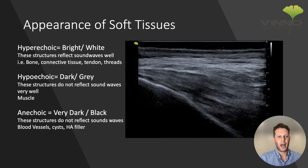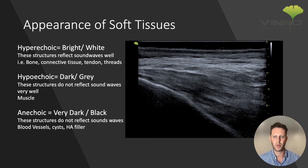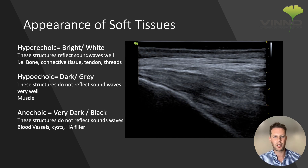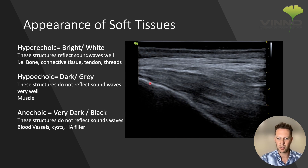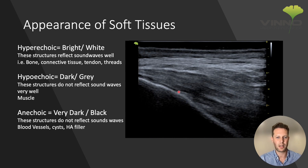Let's talk a little bit about how different soft tissues appear on ultrasound. Any structures that are highly reflective of sound waves are going to appear brighter on ultrasound, while structures that let the sound waves pass through them appear darker. In ultrasound terminology we refer to this as echogenicity. In this image of the temple region, at the bottom we have this really bright white line — this is the temporal bone. Hyperechoic structures such as bone and connective tissue are good reflectors of sound waves and appear white or bright on ultrasound.